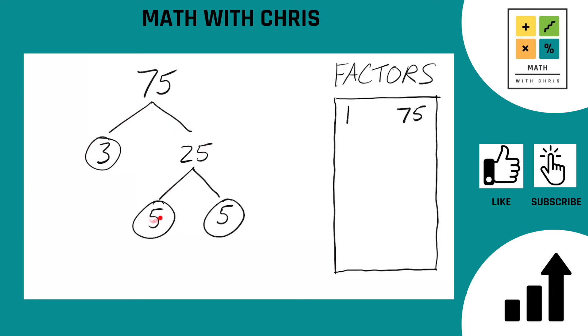Any path we take, any branch we go ends in a circled prime number. So the prime factors of 75 are a 3, a 5, and a 5. Let's write those out. 3, 5 times 5. That does indeed equal 75. Check mark that.